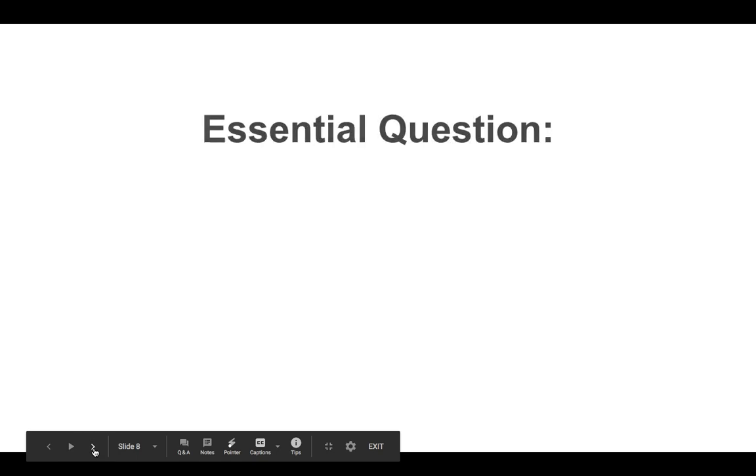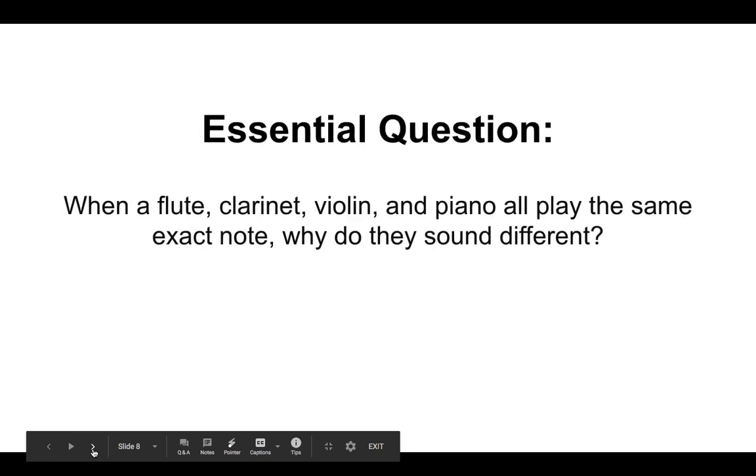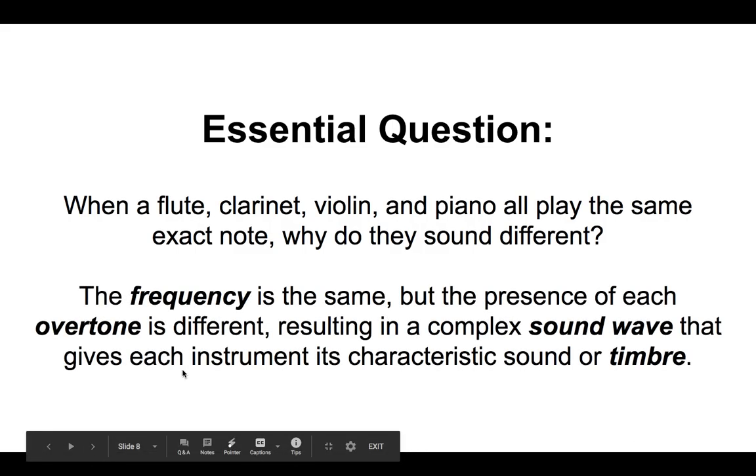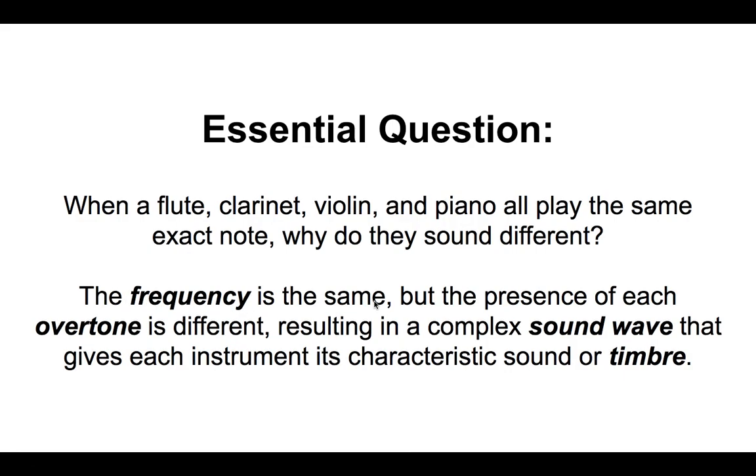So let's go back to that essential question. When a flute, clarinet, violin, and piano all play the same note, why do they sound different? And now we can answer that. So even though the frequency is the same, because they're all playing the same note, the presence of each overtone is different for each instrument, resulting in a complex sound wave that gives each instrument its characteristic sound or timbre.